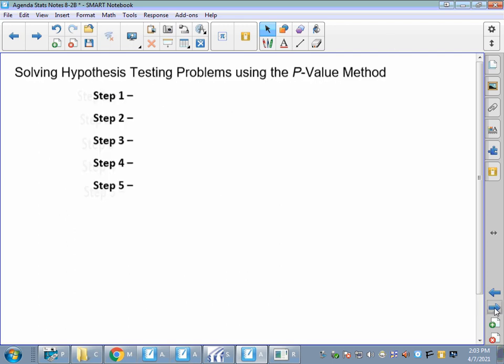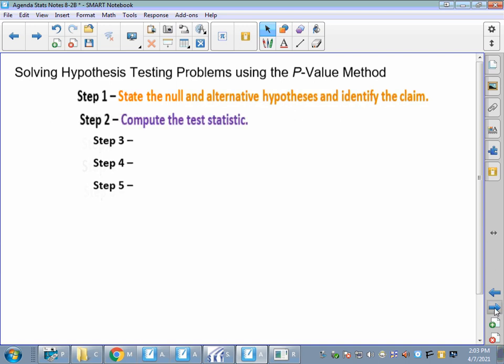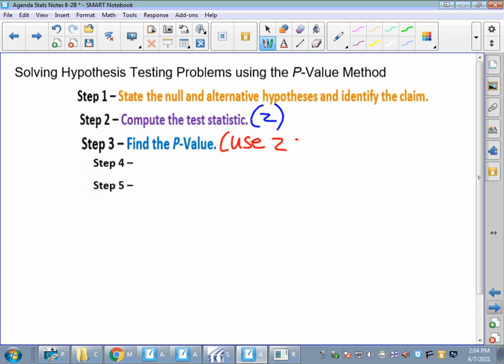Let's run through our steps. There's just a couple little switches, a couple little differences. Step one, we still state our null and alternative hypotheses. We still identify the claim. Step two, we're going to compute a test statistic. We did that at step three before. We're going to use our Z value, right? Our test statistic for mean is still Z. Step three, then, we're going to find our p-value. We find our p-value using our Z score.